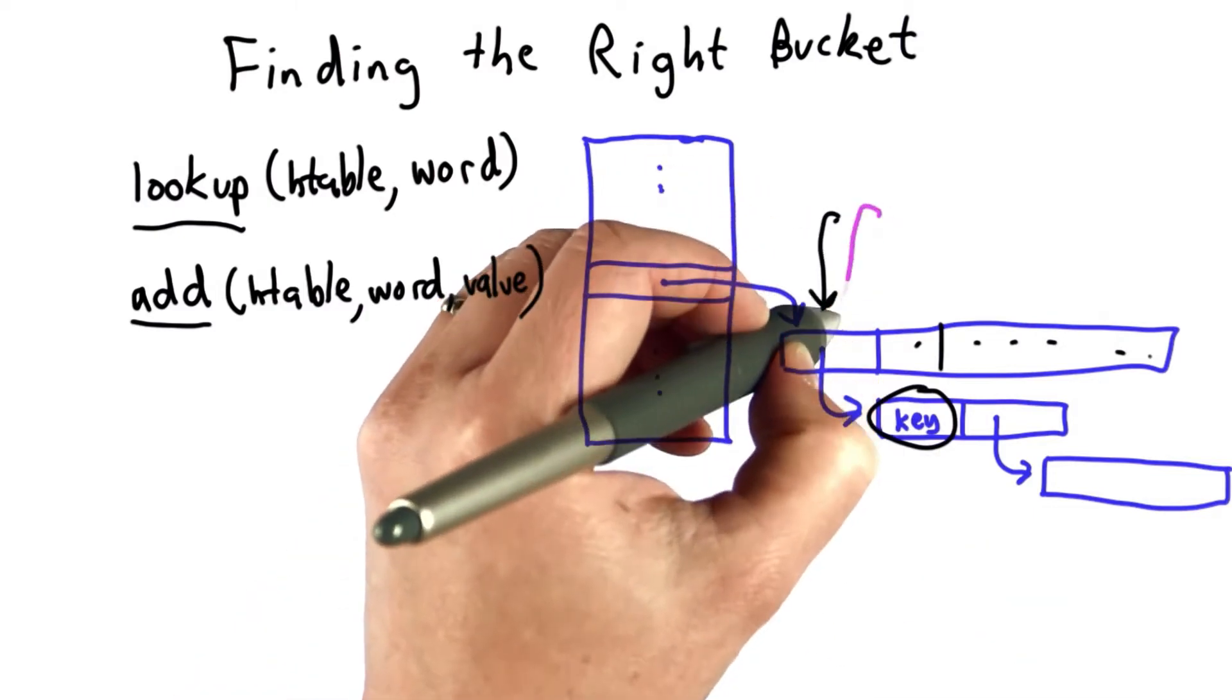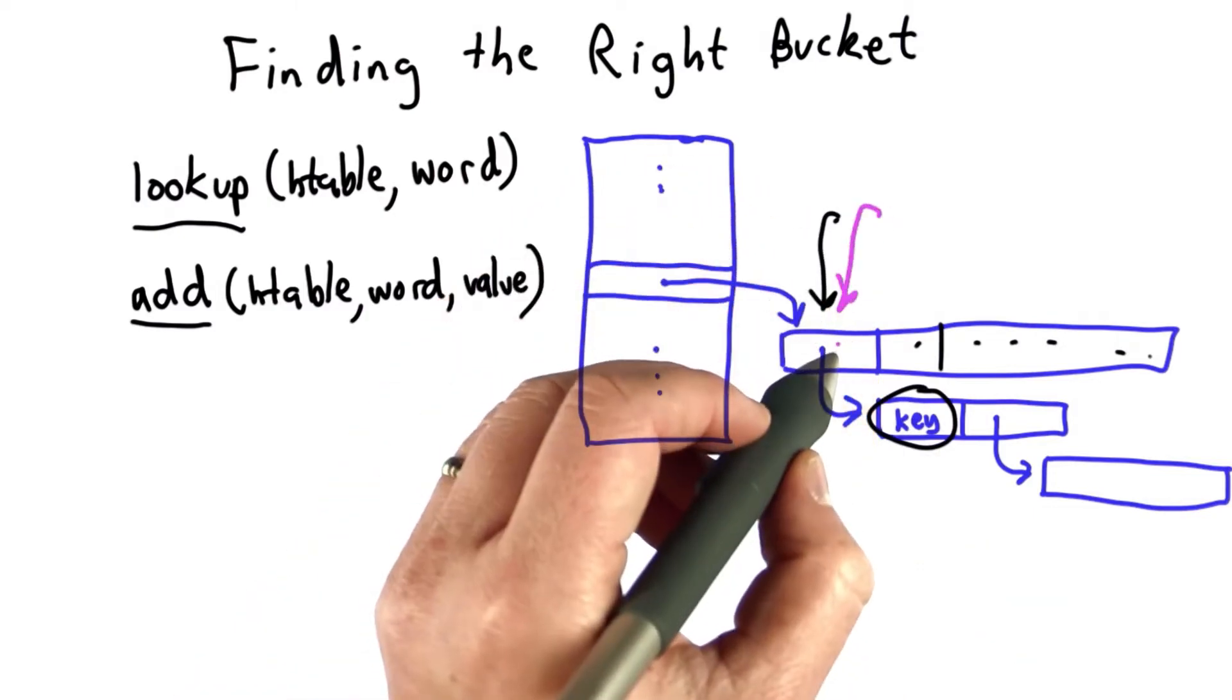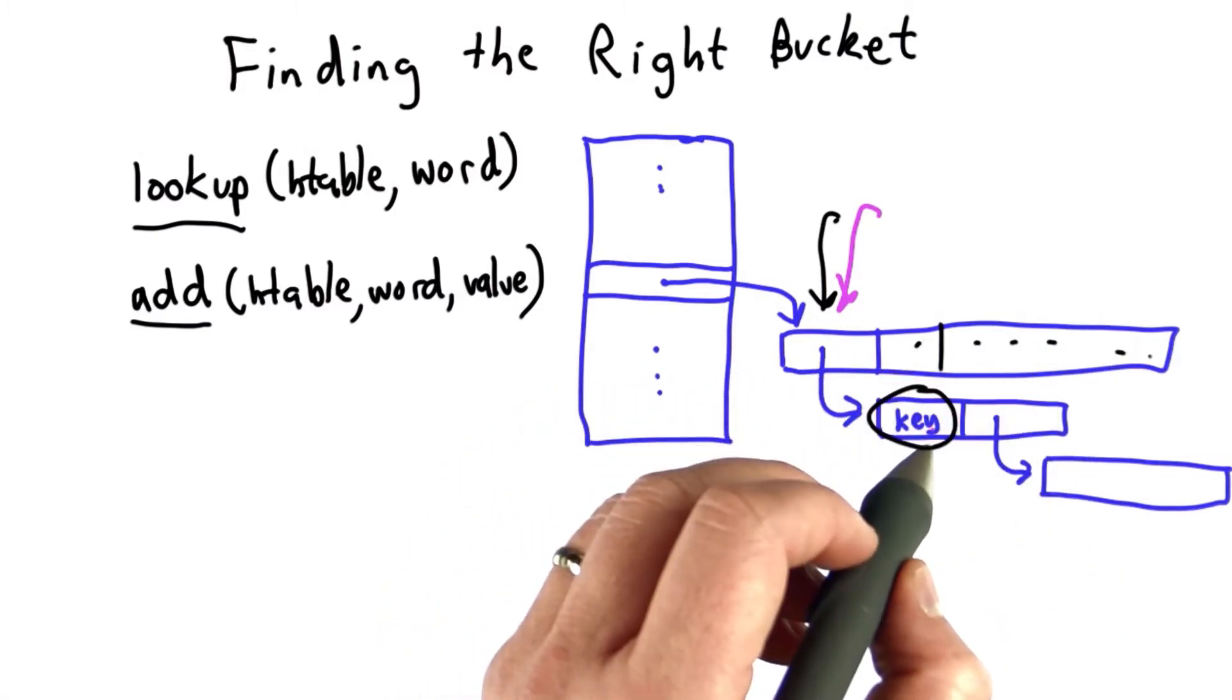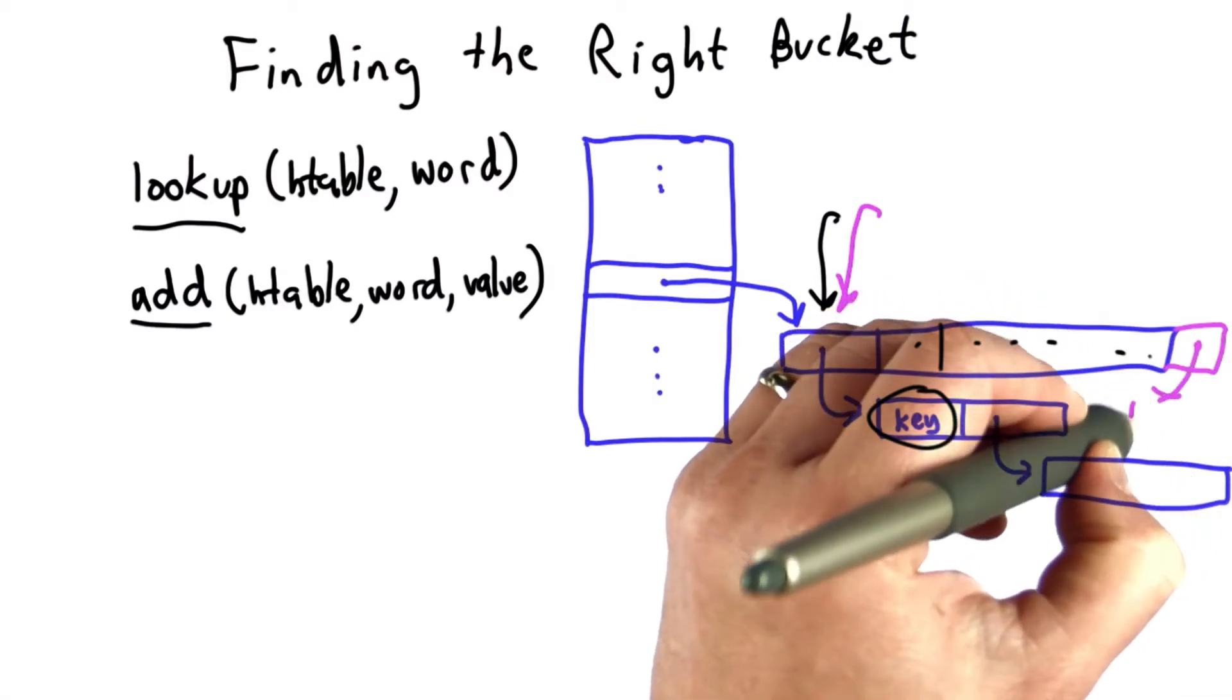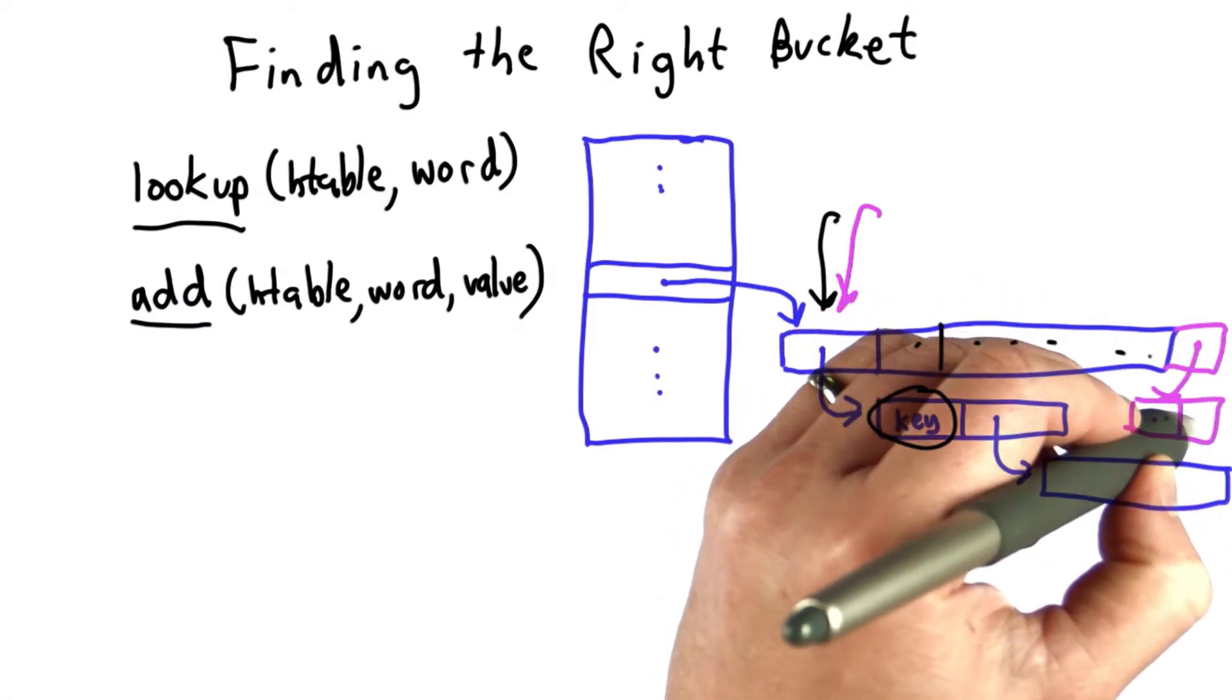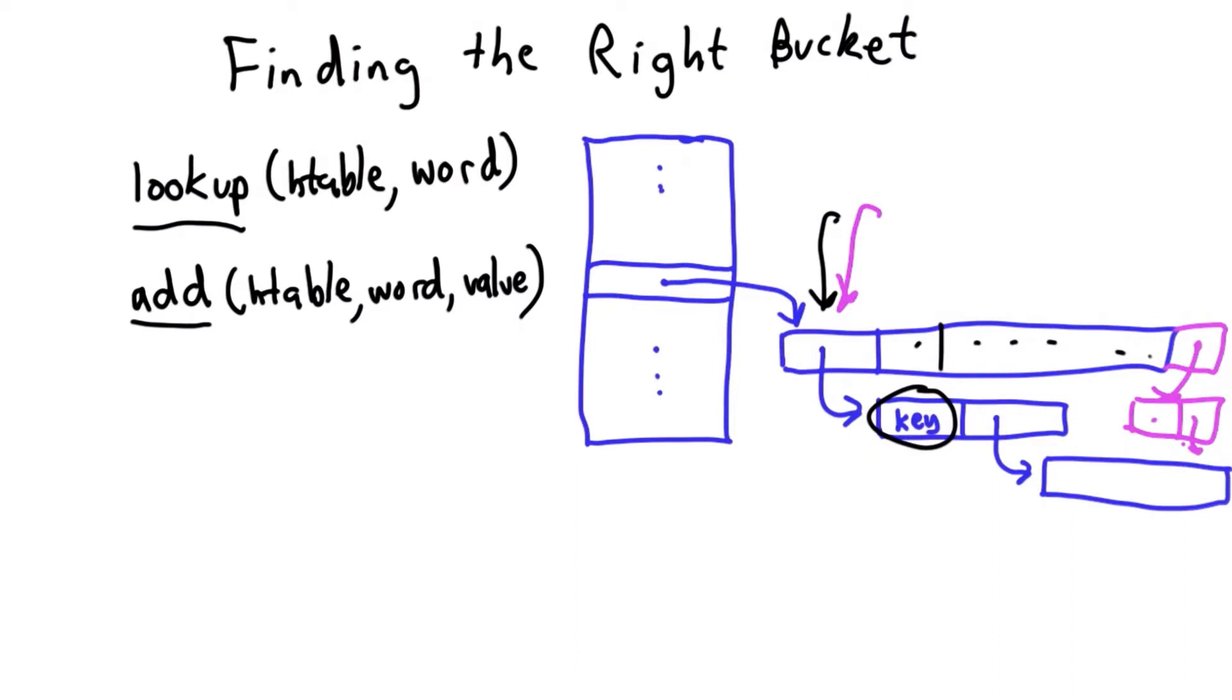If we're doing add, we also start by finding the right bucket, then look through and see if that word already exists. If it doesn't exist, we add a new entry with that word and value. Both operations depend on first being able to find the right bucket, so we'll do that once and reuse that code in both lookup and add.